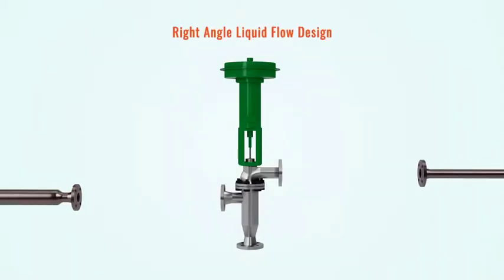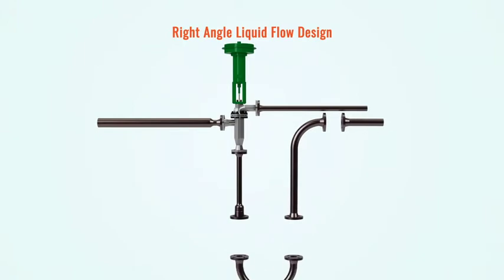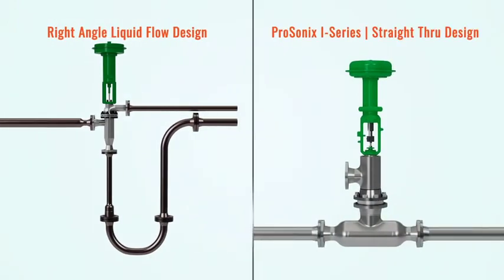Unlike right-angle liquid flow design heaters, which require piping changes to install, the Prosonix i-Series pipe spool design fits directly into your fluid piping to simplify installation and reduce the cost of additional piping changes.